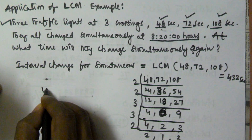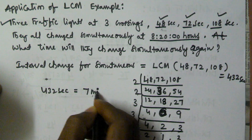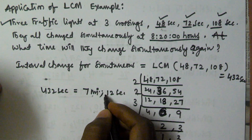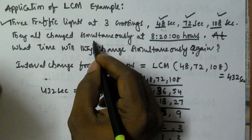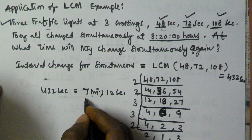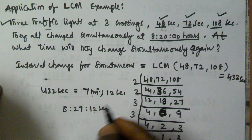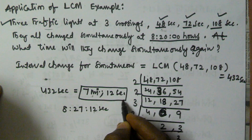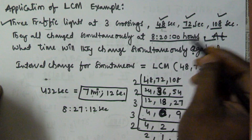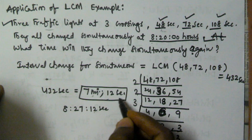432 seconds equals 7 minutes 12 seconds. According to the given question, they simultaneously changed at 8:20. So again they will change simultaneously after 8 hours 27 minutes 12 seconds, because the last simultaneous change was at 8 hours 20 minutes, and next time is that time plus 7 minutes 12 seconds.